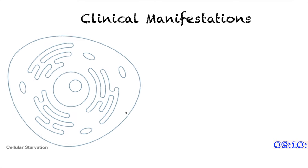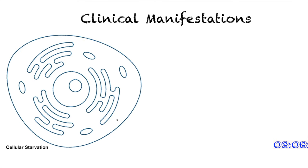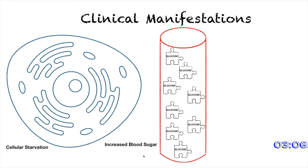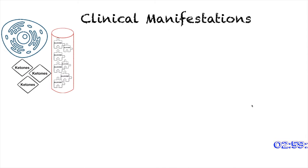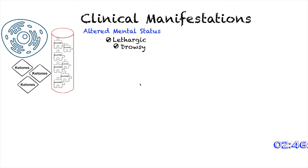Now let's talk about the clinical manifestations of diabetic ketoacidosis. These signs and symptoms occur because of three occurrences: cellular starvation, the increase of blood sugar in the bloodstream, and the presence of ketones in the bloodstream. First is altered mental status — because glucose is not able to get into our cells, our brain cells are deprived of glucose and energy, which causes altered mental status. Some patients become lethargic and drowsy.